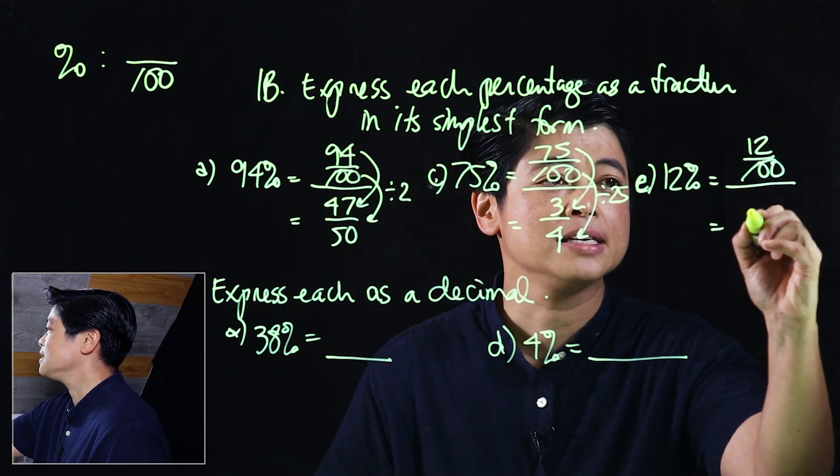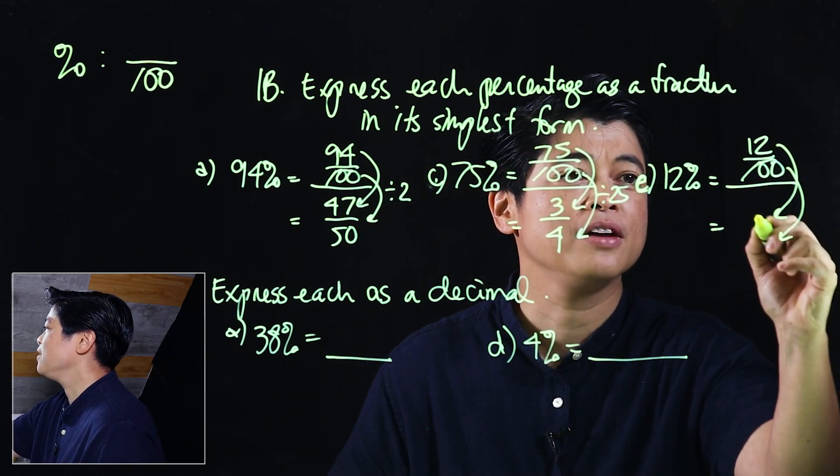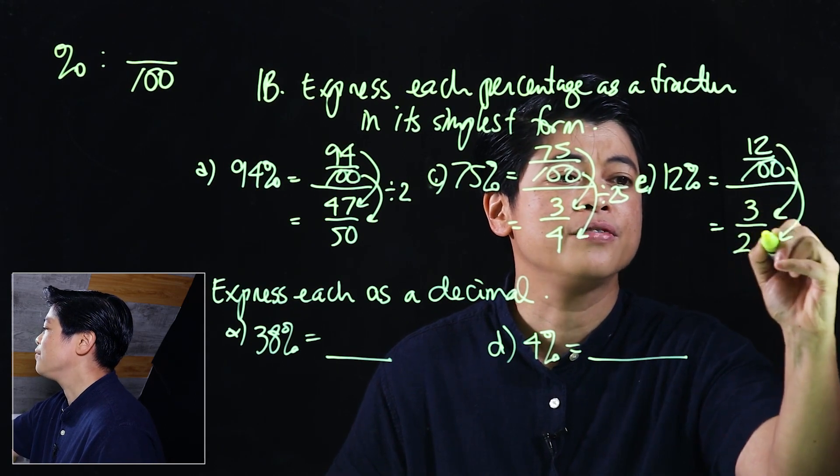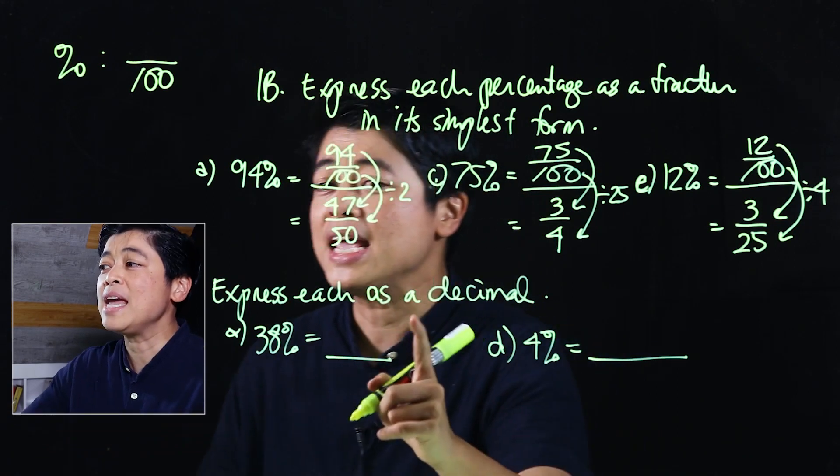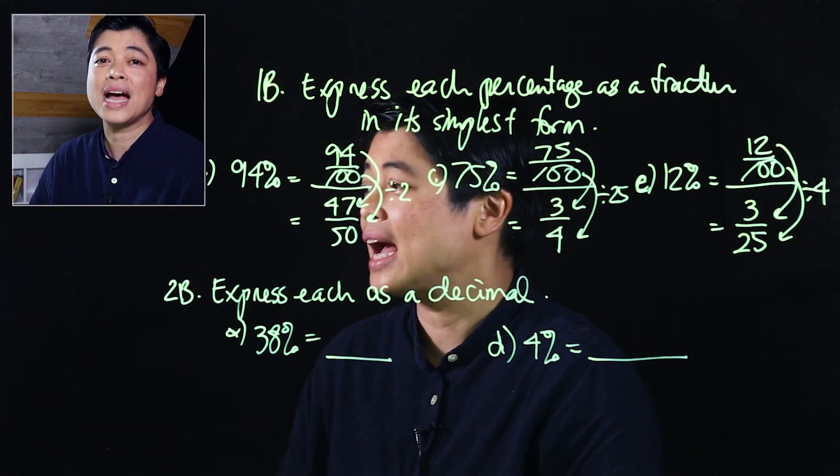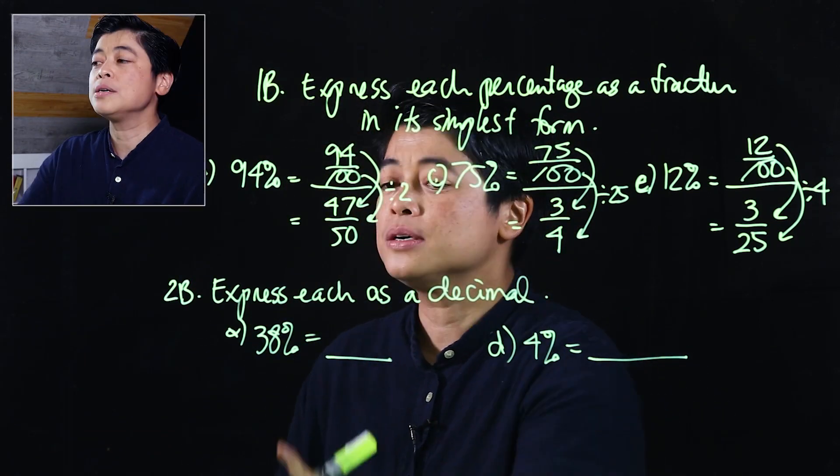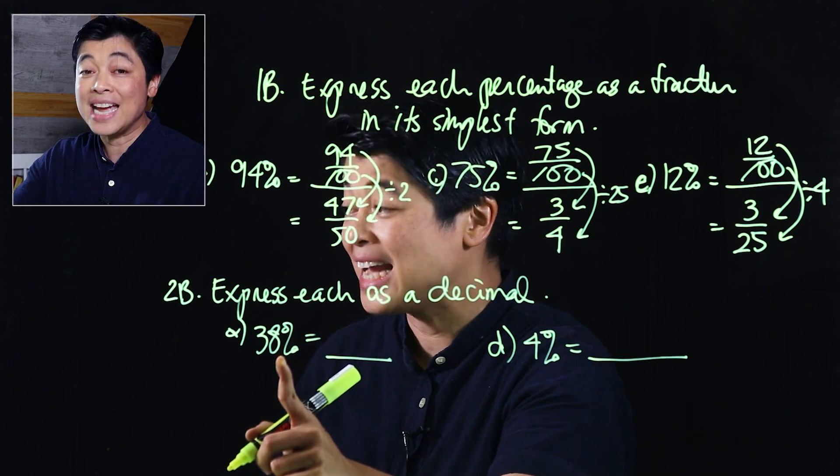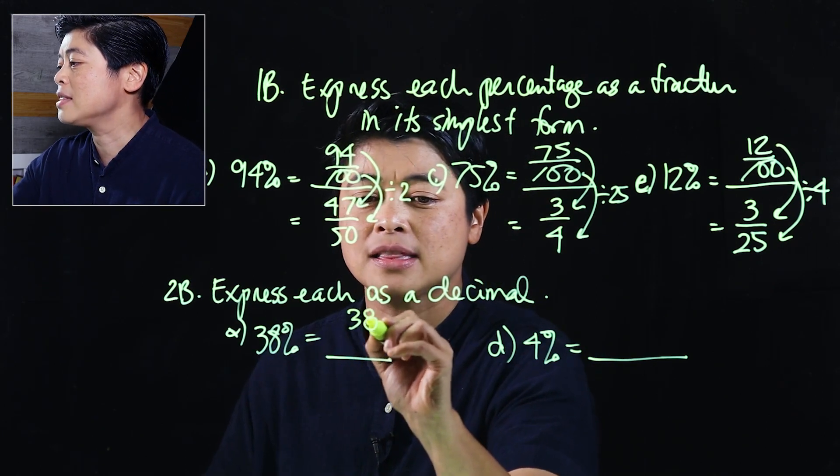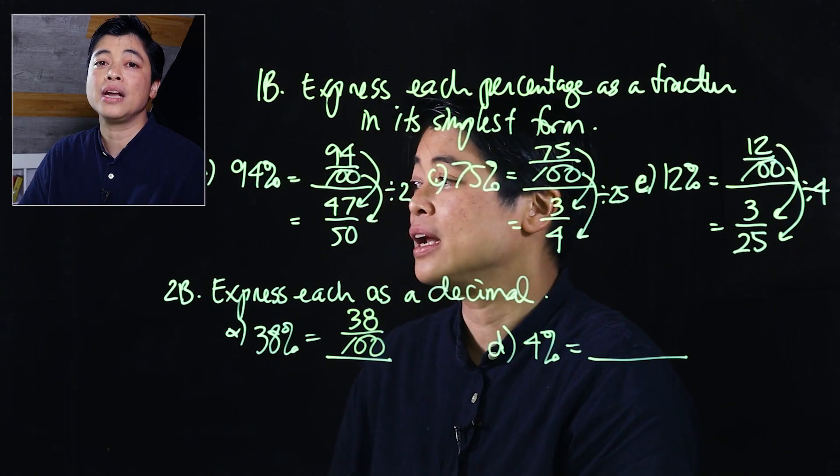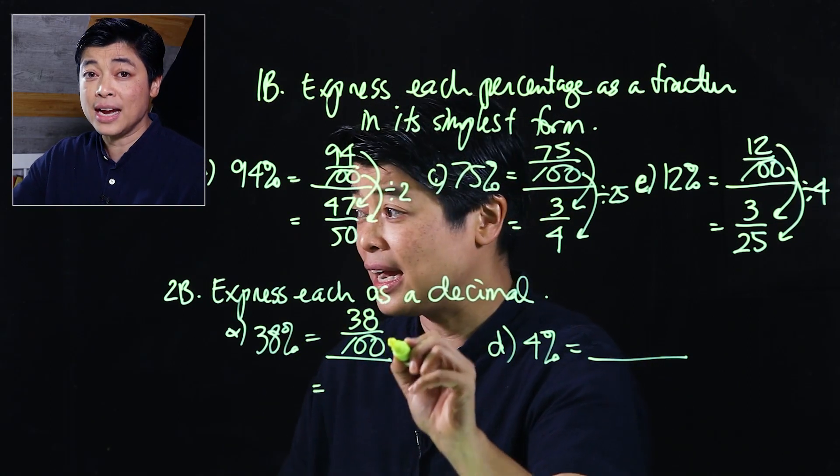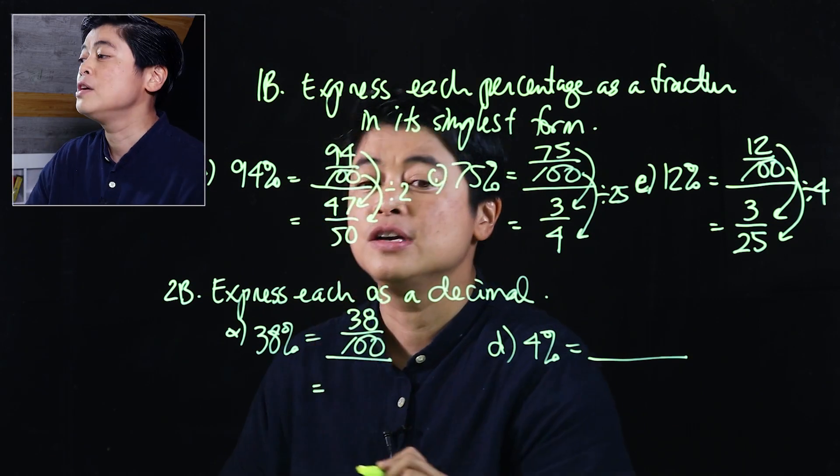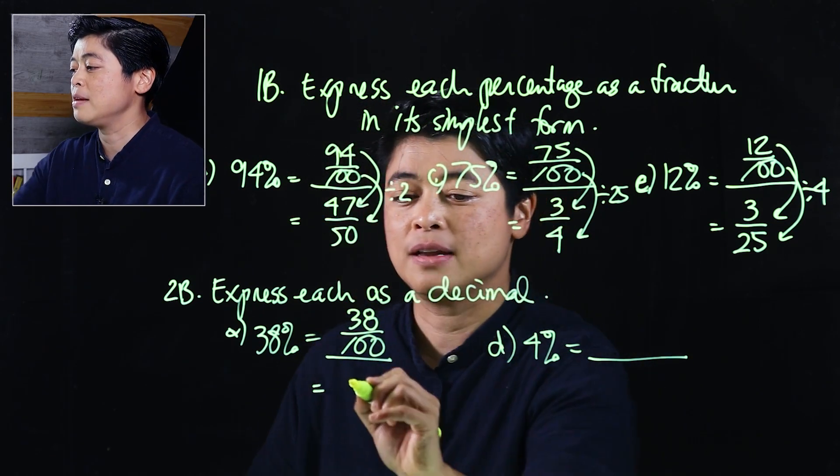In b it says express each as a decimal. Since this is percent, that's 38% or per 100, which means since I'm dividing by 100 I need to move the decimal place two places to the left. That means this will be 0.38.